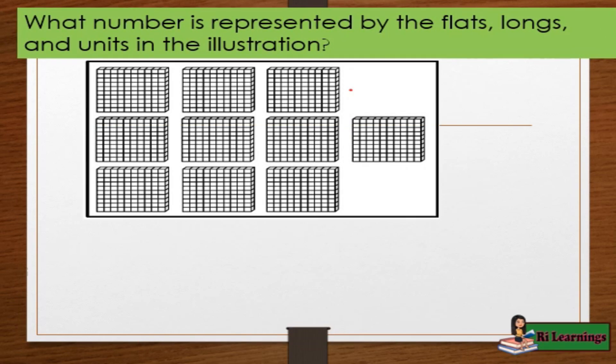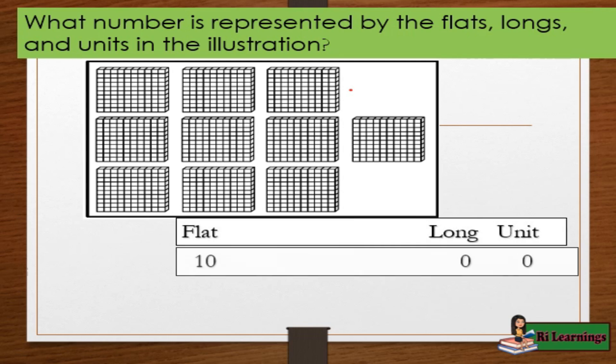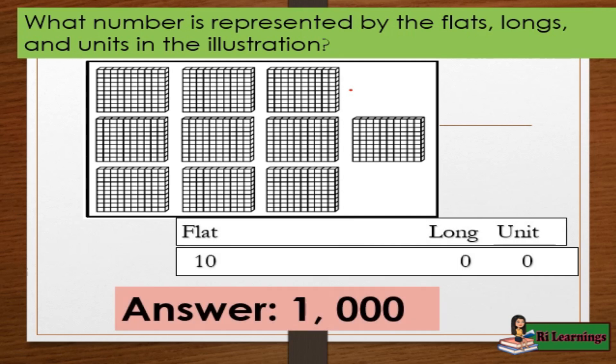What number is represented by the flats, longs, and units in the illustration? 0 units, 0 longs, 10 flats. Answer: 1,000.